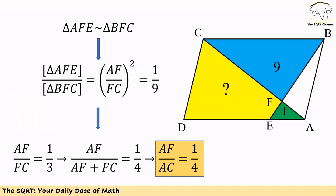For two similar triangles, the ratio between their areas equals the ratio between their corresponding sides squared. Based on this, (AF/FC)² equals the ratio of the green triangle area over the blue triangle area, which is 1/9. So AF/FC equals 1/3, and we can conclude that AF over (AF + FC) equals 1/4.